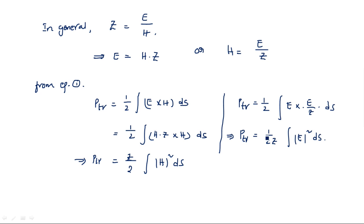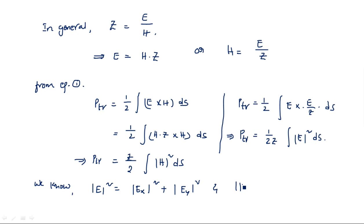We know that |E|² consists of both components Ex and Ey, so |E|² = |Ex|² + |Ey|². Similarly, |H|² = |Hx|² + |Hy|². The electric field and magnetic field each have both x-axis and y-axis components.